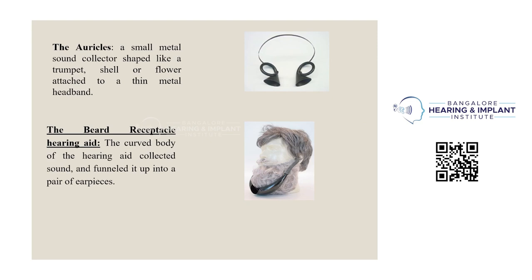Next, the auricles — small metal sound collectors shaped like a trumpet, shell, or flower — were attached to a thin metal headband. The beard receptacle hearing aid curved the body of the hearing aid to capture sound and funnel it up into a pair of ear pieces.